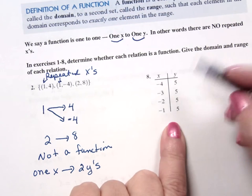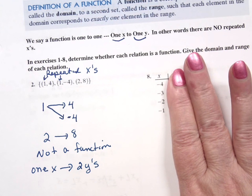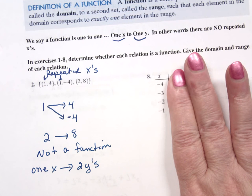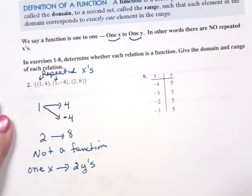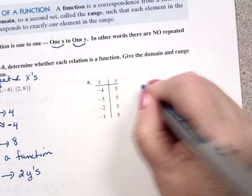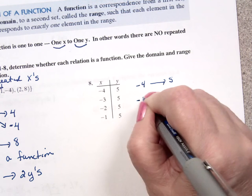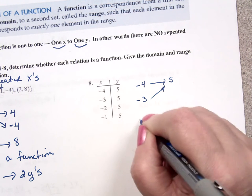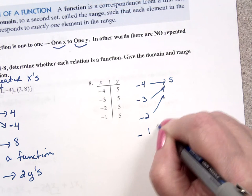So if I look at this problem, I'm going to cover up the y values. Do I have repeated x's? No. So it is a function. But then you look at the y. Wait a minute. I only have one y value. Well, it really doesn't matter. If I look at the map of this guy, I'm going to have negative four is going to go to five, negative three is also going to go to five, negative two is also going to go to five, negative one is also going to go to five.